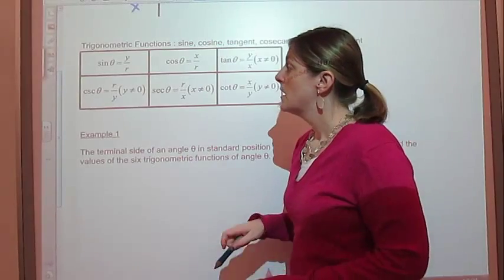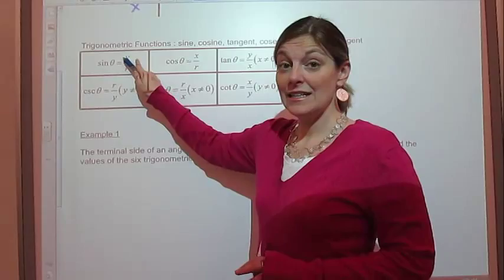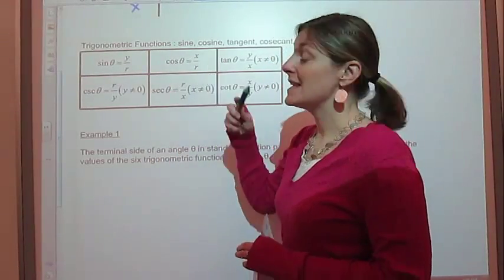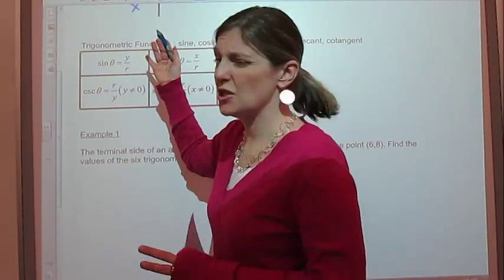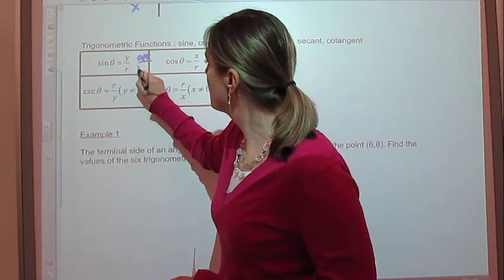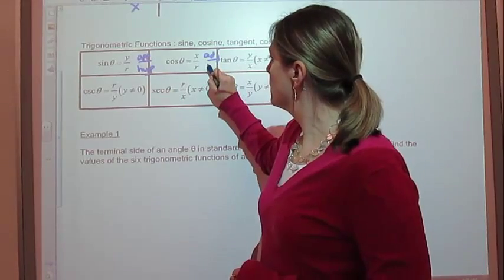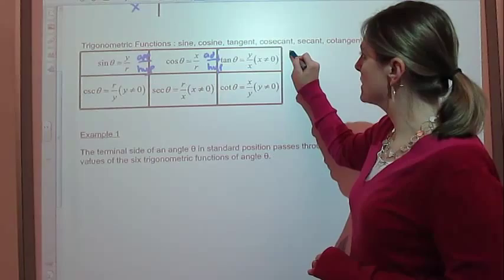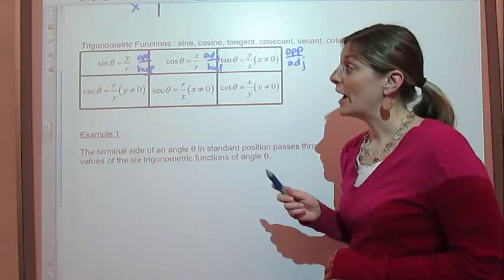So our trig functions — hopefully you learned in geometry that sine is the y value over that hypotenuse, the r value, which is the opposite over the hypotenuse. Cosine is the x value over the r value, which is the adjacent over the hypotenuse. And tangent is y over x, or the opposite over the adjacent.